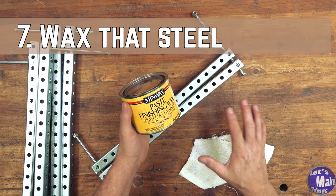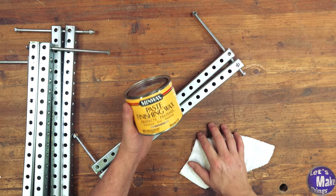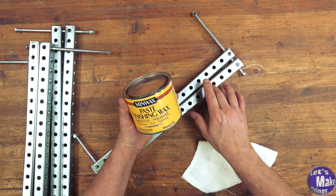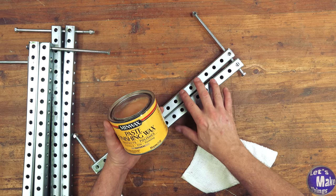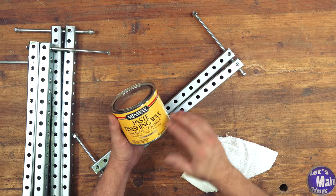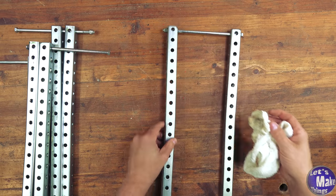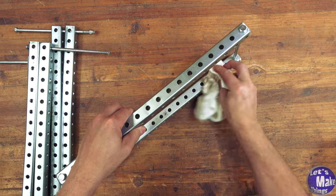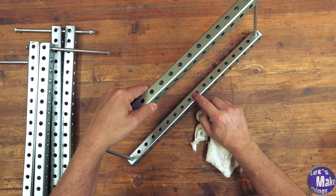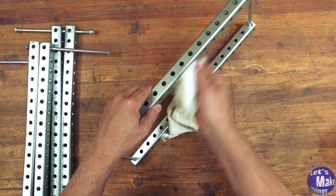But before we do that, I almost forgot we need to add some paste finishing wax to our cauls. This will prevent our glue from sticking to the steel as well as sometimes the steel will leave behind some black marks and we don't want that. So we'll just go ahead and add a little bit on top now. And we really only need to do the inside of the cauls. We don't need to worry about obviously doing the outside. And it does look like it's removing the stars that I added earlier, which is good.